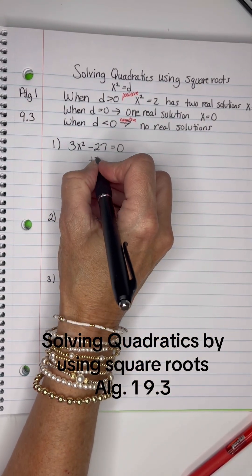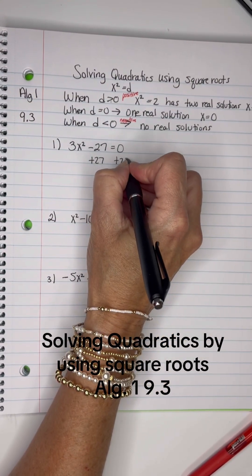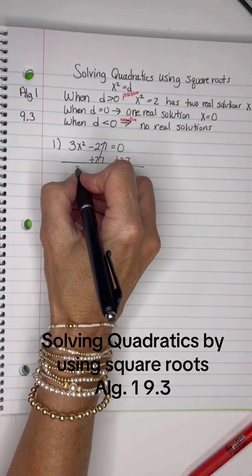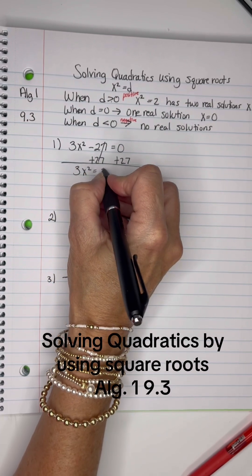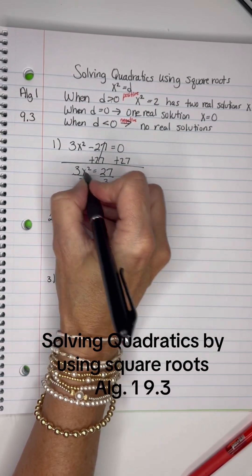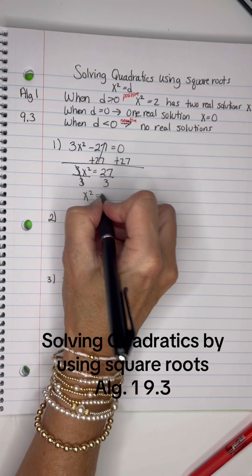We're going to add 27 to both sides of the equation because I want it in this form. So I have 3x squared equals 27. I'll divide by 3, and I have x squared equals 9.